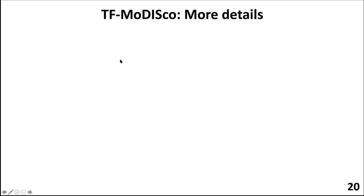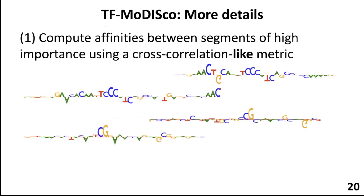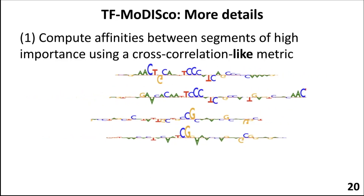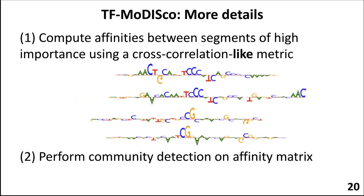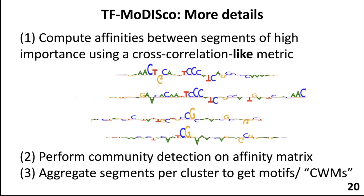Clustering seqlets works by computing pairwise affinities between high-importance segments using a cross-correlation-like metric — sliding sequences across each other to find the best alignment, then using similarity at that best alignment as the affinity between each pair of seqlets. This gives an affinity matrix over all pairs of seqlets, on which community detection is run to produce clusters. Within each cluster, segments are aggregated to produce CWMs.